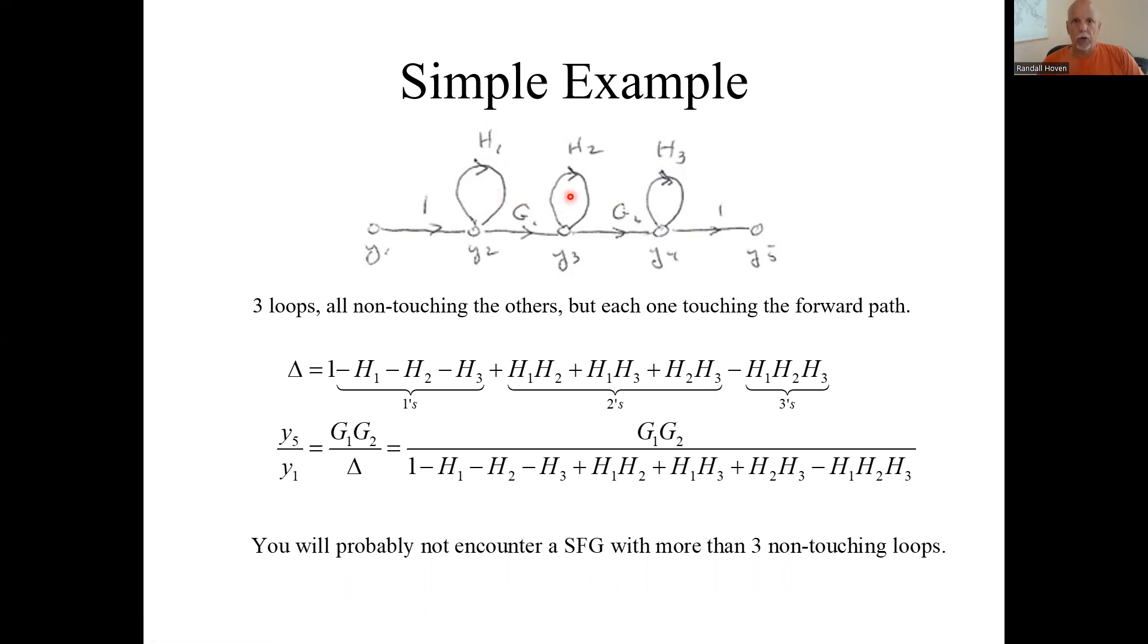And now we have a triplet of non-touching loops. None of these touch each other. So lastly, we subtract off the product of the triplets. So here the gain is H1, H2, H3. See, that's how that works.